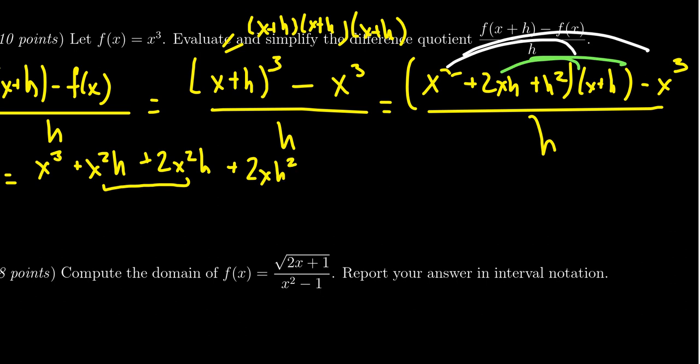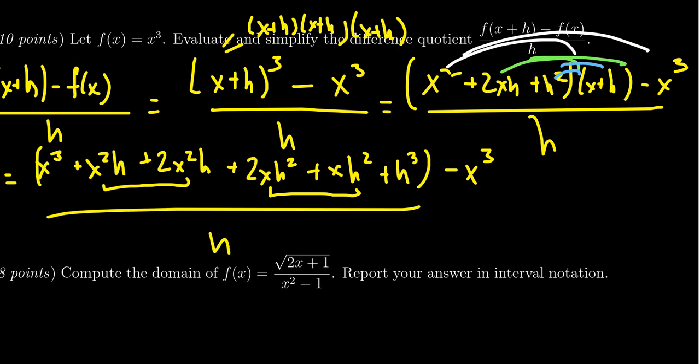Now, the last one to do is distribute the h² onto both of these terms. We're going to get h² times x, which gives us xh². You'll notice that these are also like terms, which we'll combine in just a moment. And then, lastly, you get h² times h, which is h³. And then, don't forget the other things that were along for the journey. We have a negative x³ over h.